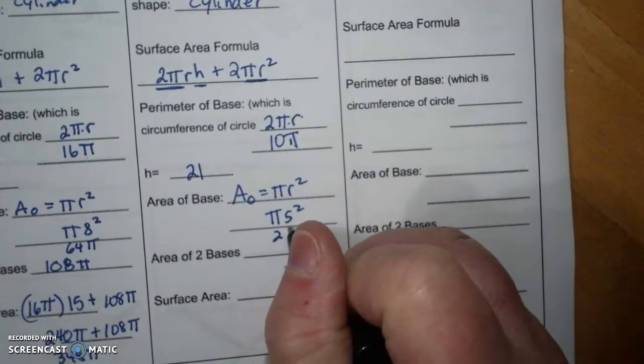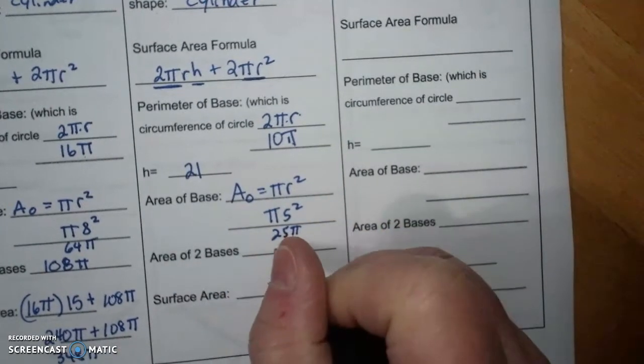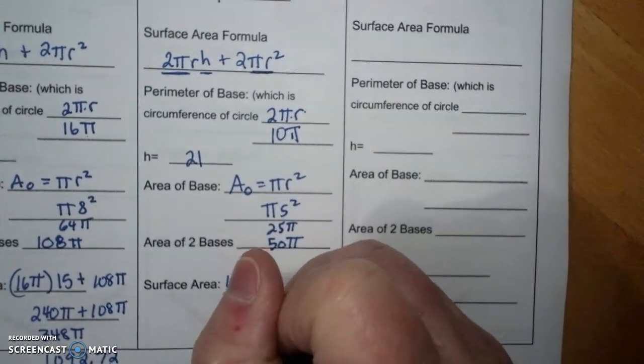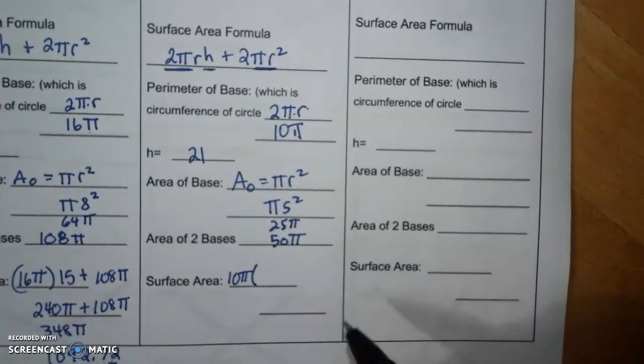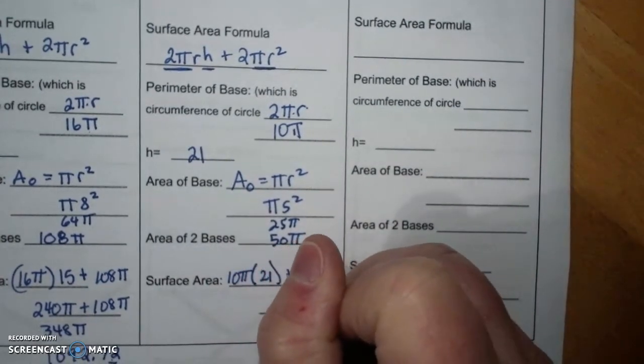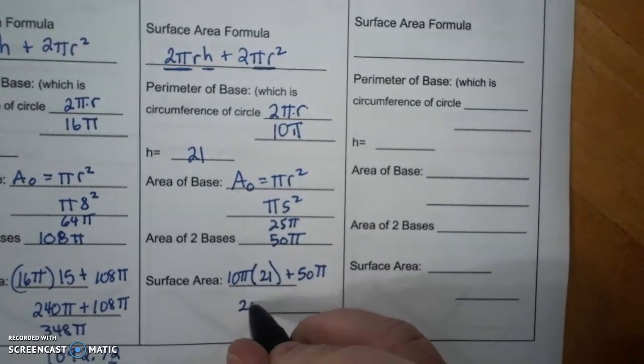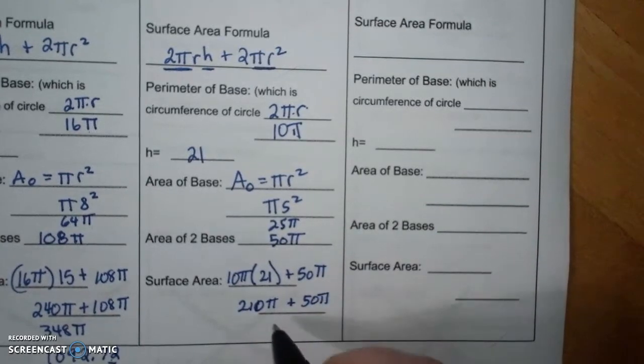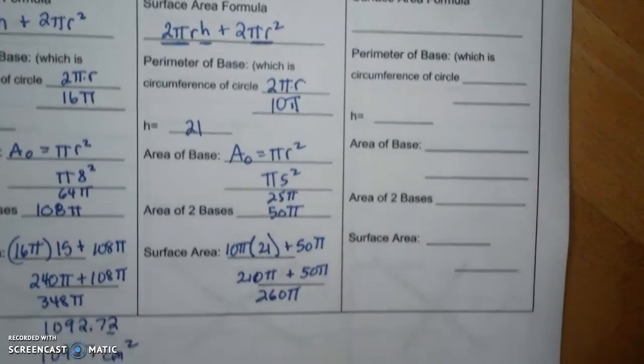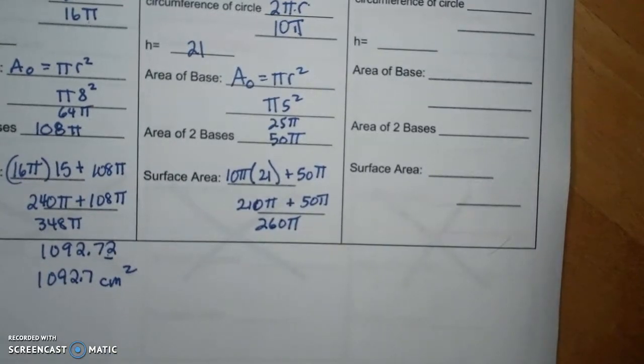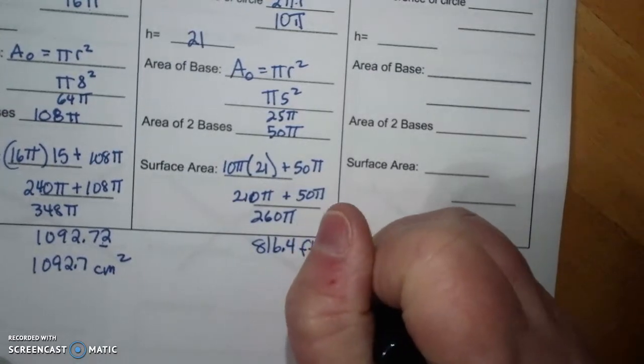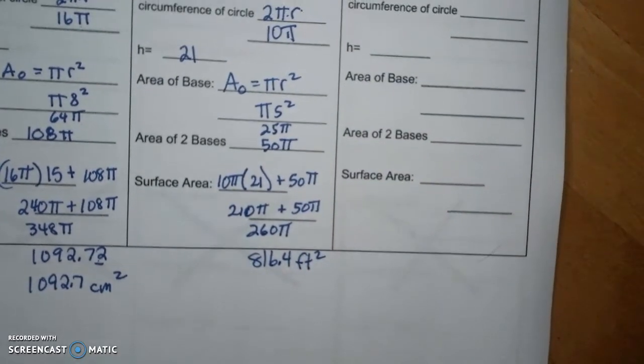Which is 25π, which 2 of them is 50π. Surface area is 10π times the height which is 21 plus 50π, which is 210π plus 50π which is 260π, which is 260 times 3.14 is 816.4 feet squared. And it's square feet because we're doing area.